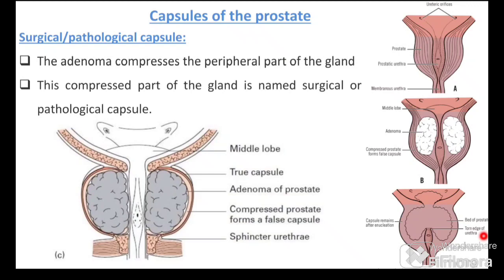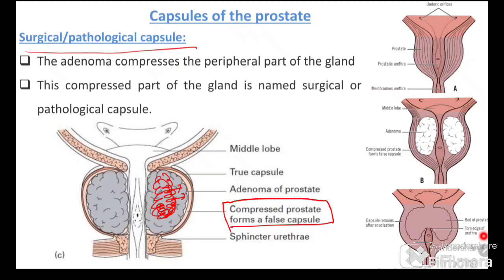There is also a surgical or pathological capsule. When there is an adenoma, the growing glandular tissue compresses the prostatic stroma. This compressed stroma appears like a capsule and is named the surgical or pathological capsule. So it is the compressed part of the prostate gland that forms this surgical or pathological capsule.